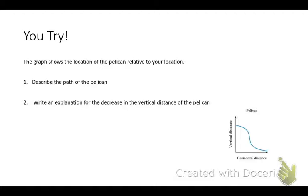Now, I want you to practice one. Over here, we have the path of a pelican. We have the pelican's vertical distance from the ground, or you could say from the ocean, and then the horizontal distance. I want you to describe what you see happening with the path of the pelican. And then I want you to answer number two. Write an explanation for this decrease. What do you think is happening with the pelican? Why do you think their vertical distance is decreasing? Describe the path and then give me an explanation for why you think it would decrease.